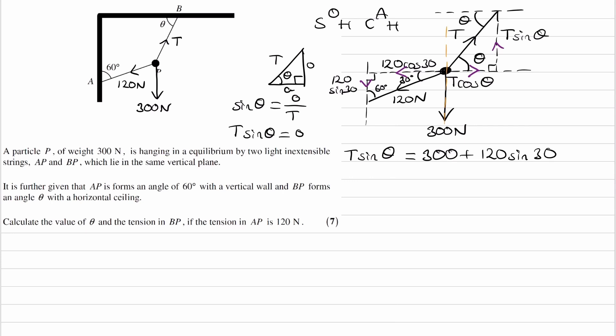And then for the horizontal direction, there's only two forces. There's T cos theta, which goes towards the left, and 120 cos theta, that goes towards the right. So those two should be equal in magnitude. They will cancel out.